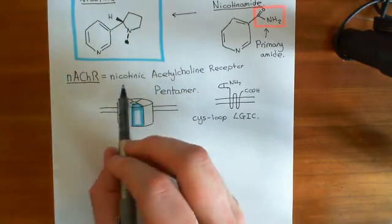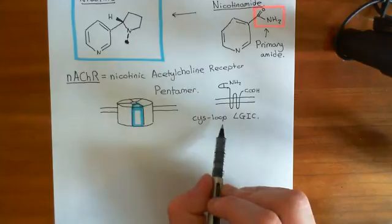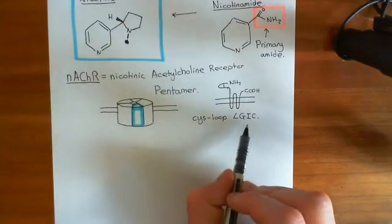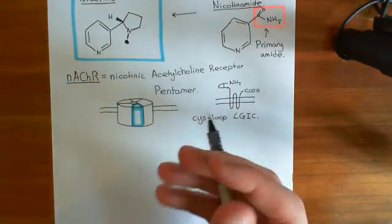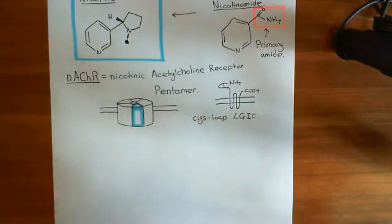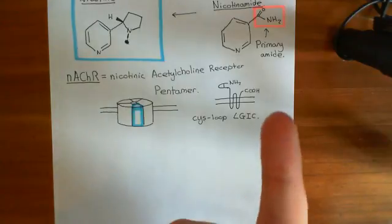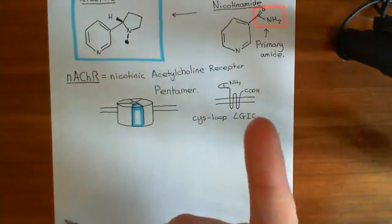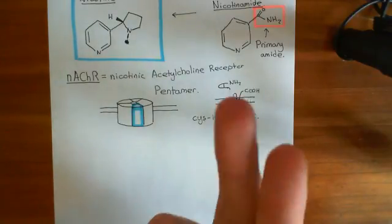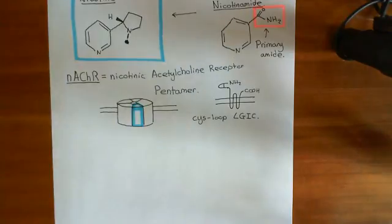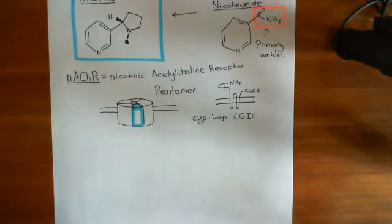Nicotinic acetylcholine receptors are an example of cis-loop ligand-gated ion channels, but there are other examples such as GABA-A receptors, 5-HT3 receptors, and glycine receptors in the spinal cord. We'll continue this discussion of nicotinic acetylcholine receptors in the next video.